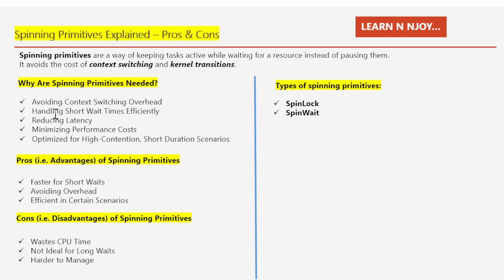The second reason is handling short wait times efficiently. If the resource will be available very shortly, then spinning — that is, actively waiting — can be faster than putting the thread to sleep. The process of sleeping and waking up a thread can be more time-consuming than just keeping it active for a brief wait. The third reason is reducing latency. Spinning avoids the extra steps involved in putting a thread to sleep and waking it up, which helps the program respond faster when the resource becomes available.